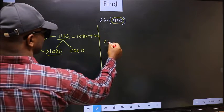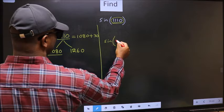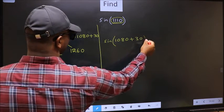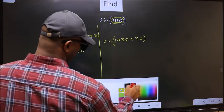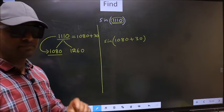So this will become sine. In place of this, now we should write 1080 plus 30. This is your step 1.